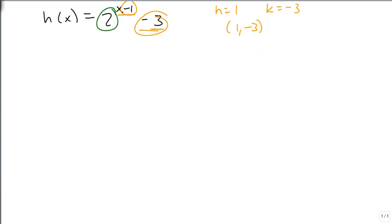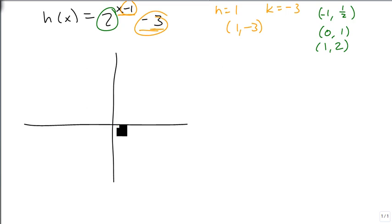Our pattern points are then built off of the 2. So we're at (-1, 1/2), (0, 1), and (1, 2). When we graph, the easiest way to do this is to move over 1 down 3 and put an x. Now we're going to draw in a new axis going through that point. We then graph our points as if this were (0,0). So we're going to go up 1, over 1 and up 2, and back 1 and up a half, and we draw our line in. So we took our f(x) = 2^x graph, and we moved it 1 to the right and 3 down to get our new graph. And that's how we graph exponential functions.